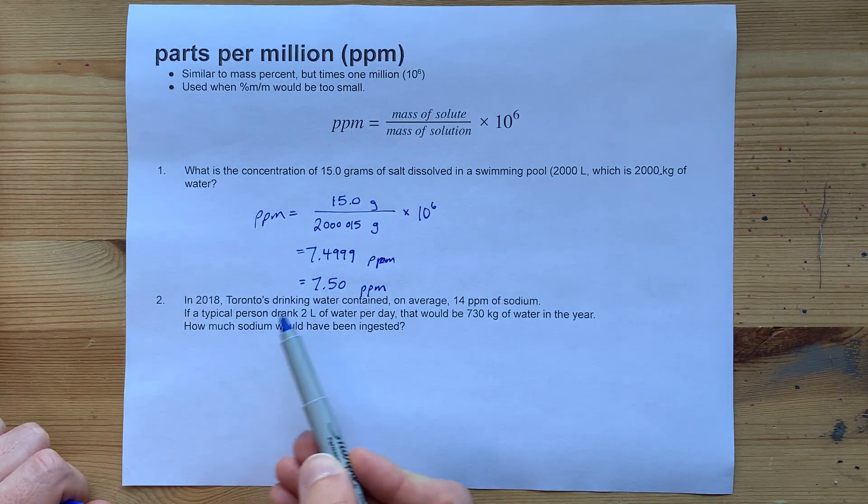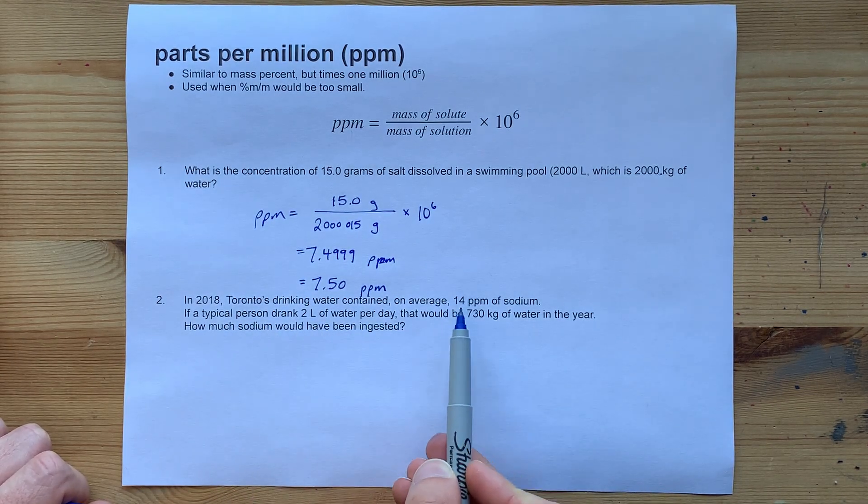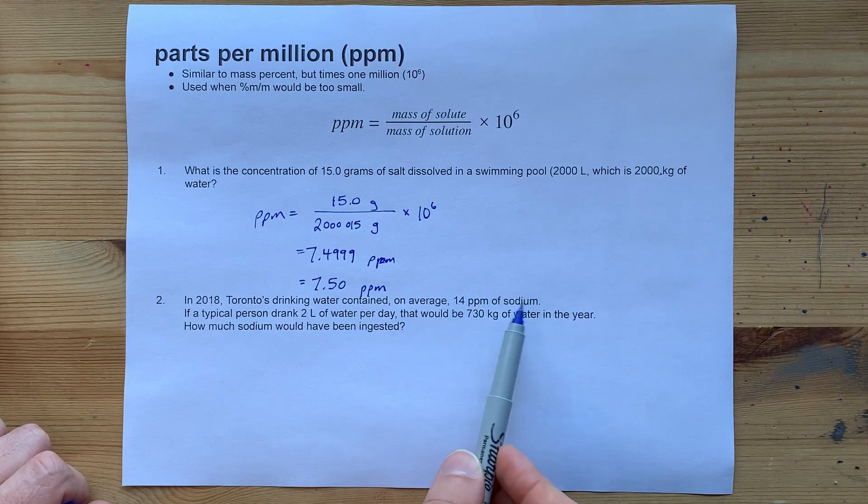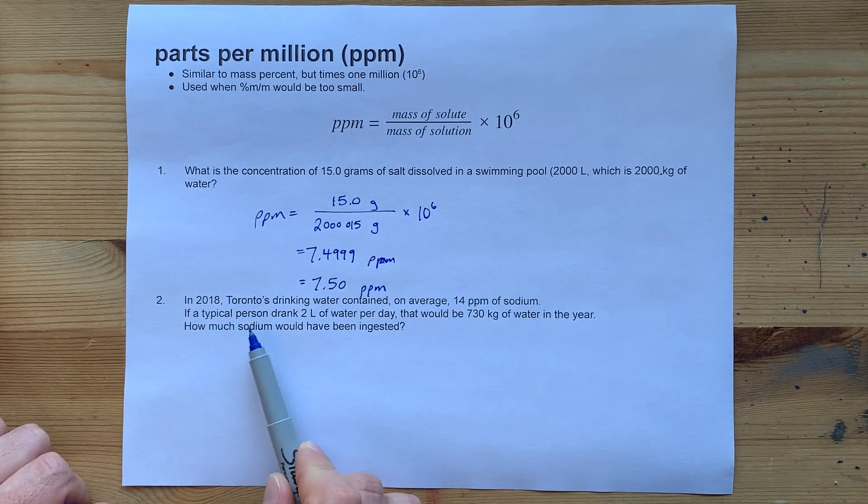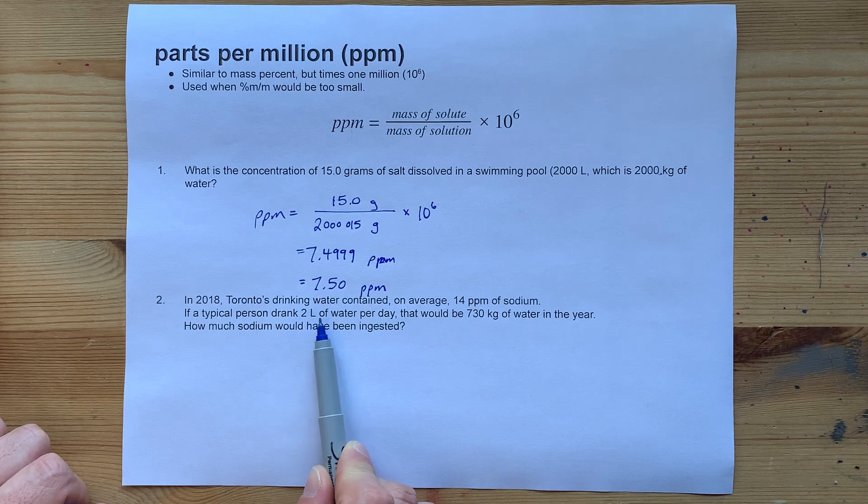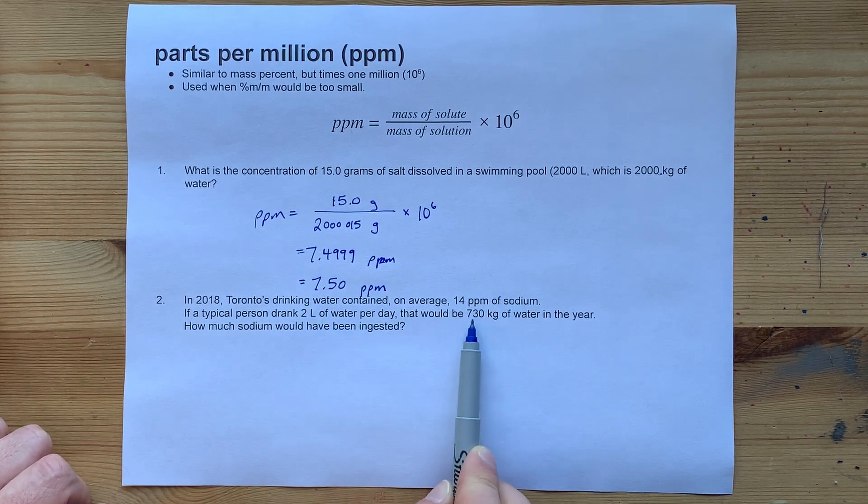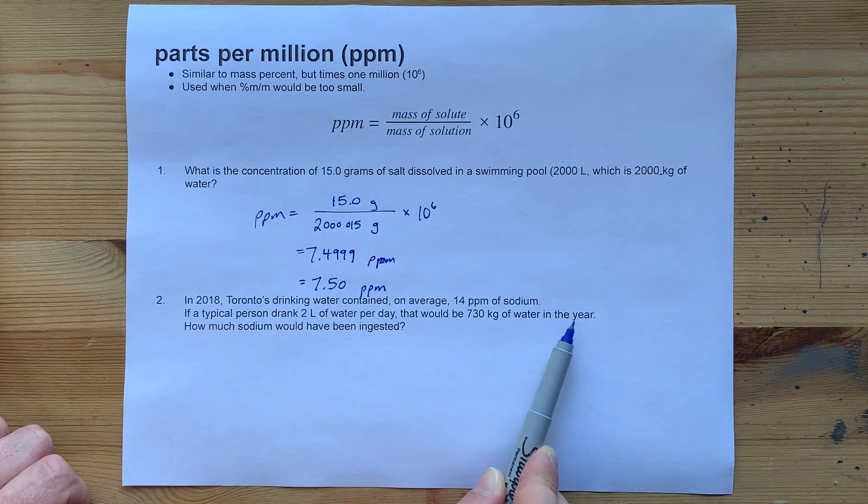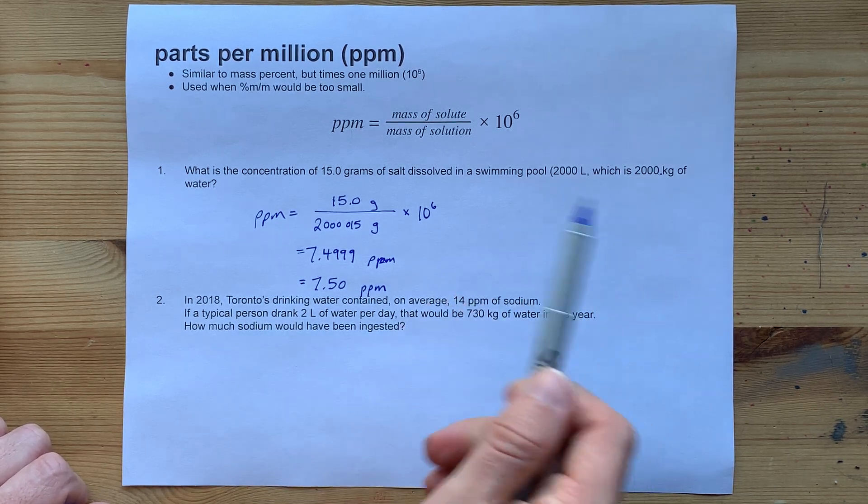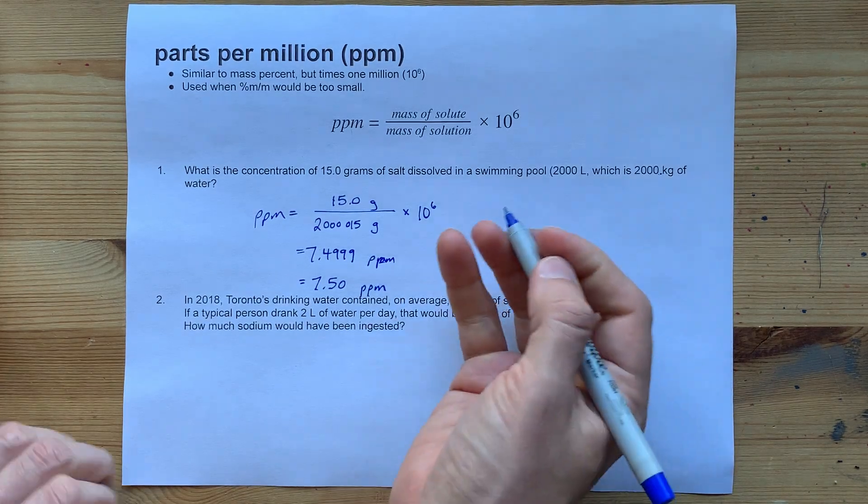But mass of solution is what goes in the denominator always anyways. Just want to emphasize that. In 2018, Toronto's drinking water contained 15 ppm of sodium. Now, if a typical person drinks their 8 cups of water a day, that's 2 litres, that's 730 kilograms per year. How much sodium would they have ingested through that?